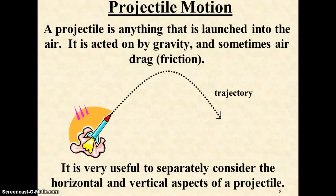As you found out from your video analysis, it's useful to consider the horizontal and vertical aspects of a projectile separately. In the vertical direction, you have acceleration, while in the horizontal direction, you have constant velocity.